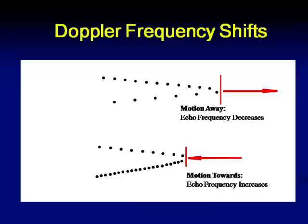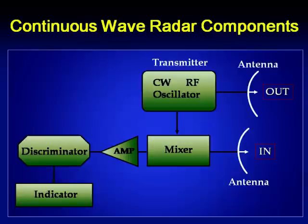From the diagram, you can see that when the target is moving away, the received signal frequency will be reduced. When the target or receiver is moving towards the source, the received signal frequency will be higher. In the block diagram of a continuous wave radar, a continuous wave source — an oscillator — is used to radiate the signals. The signal is radiated by an antenna, goes to the target, gets reflected, and comes to the receiver. At the first stage of the receiver, there is a mixer which will extract only the Doppler shift.